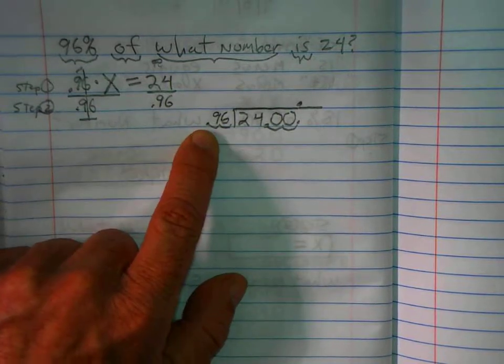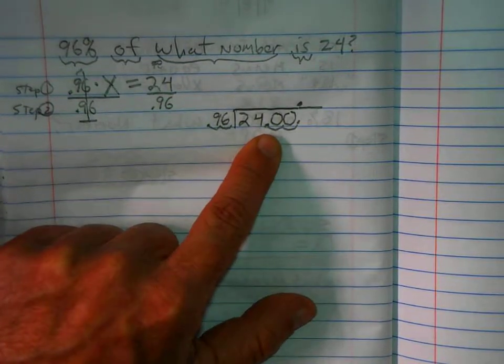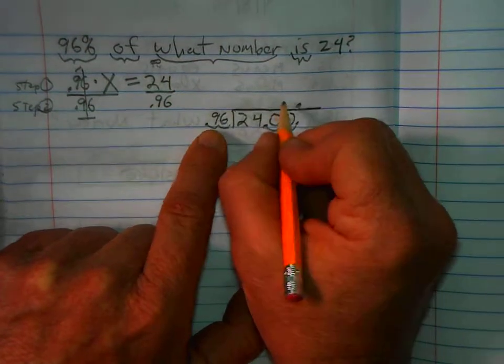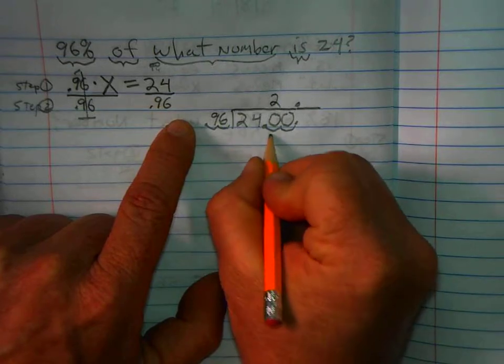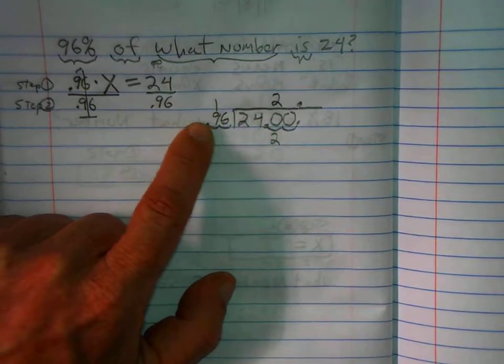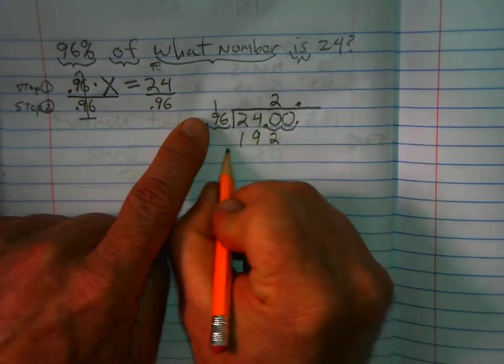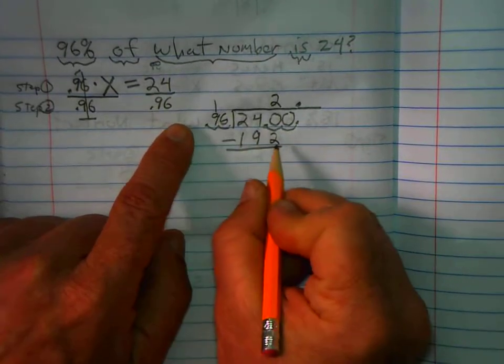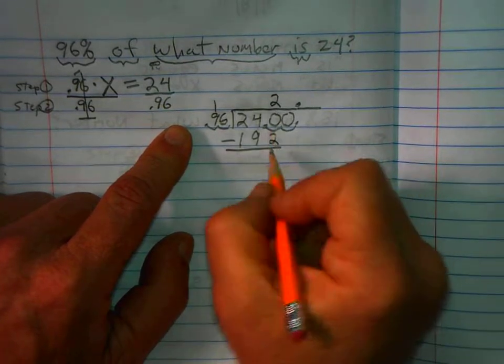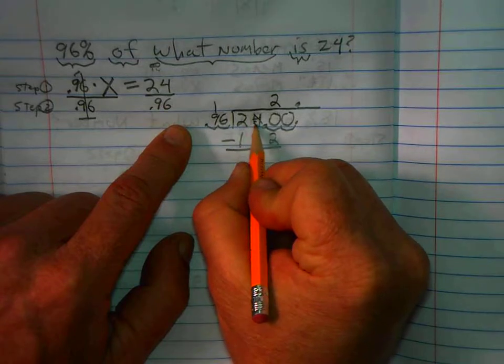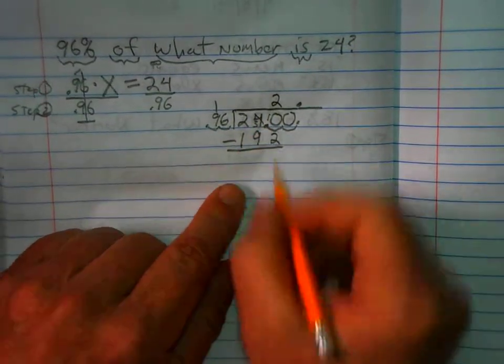96 does not go into two. 96 does not go into 24. But 96 goes into 240 two times. Two times six is 12. Two times nine is 18. Plus one is 19. I subtract. I can't subtract two from zero. So I've got to borrow from the four. Make that a three. Put a one in front of that zero. It becomes ten. Ten minus two is eight.